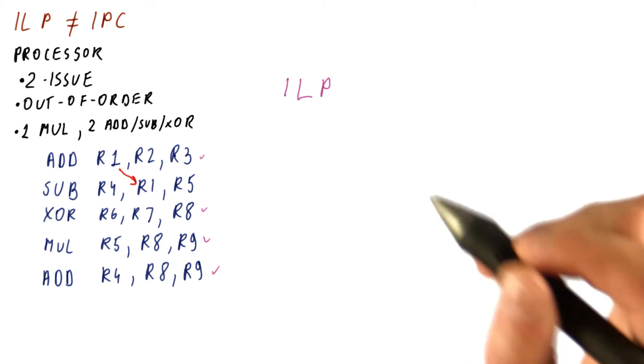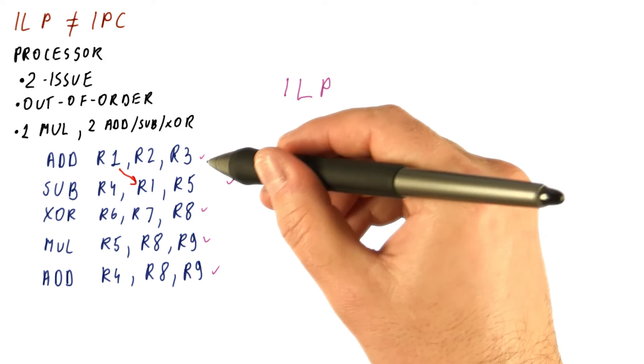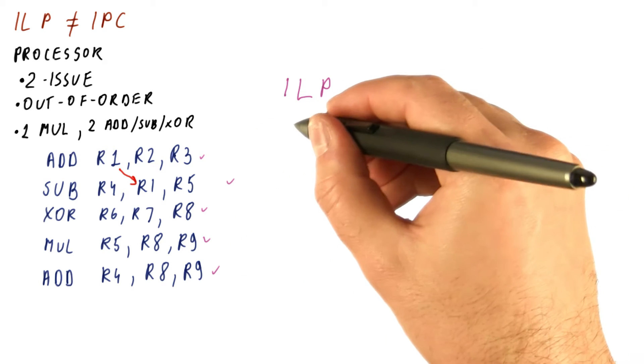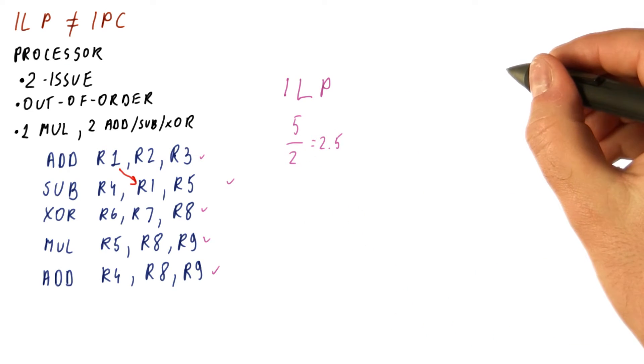This, this, this, and this would be done in the first cycle, and then this would be done in the second cycle because it depends on the instruction that is done in the first cycle. So we have five instructions over two cycles gives us 2.5.